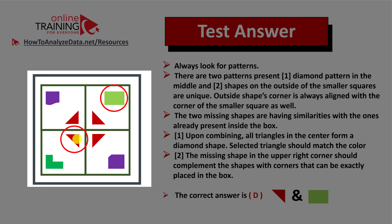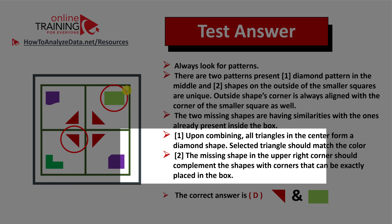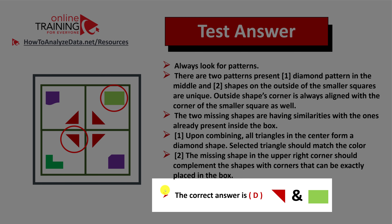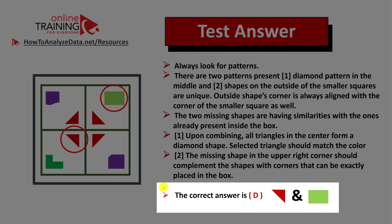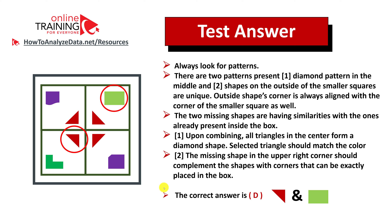Look for the triangle which matches the color — upon combining it should build a diamond. For pattern two, the missing shape in the upper right corner should complement the shapes with corners that fit exactly in the box. We selected a green rectangle. There is also a pattern of green color on the opposite side of the squares, same as the purple colors on opposite sides. The correct answer is choice D.